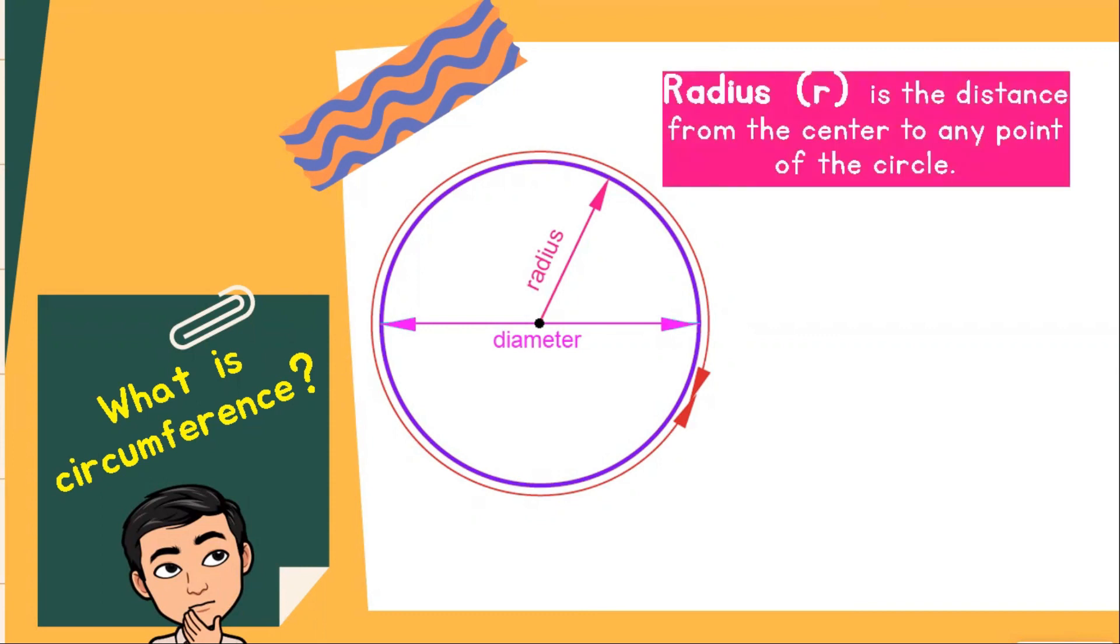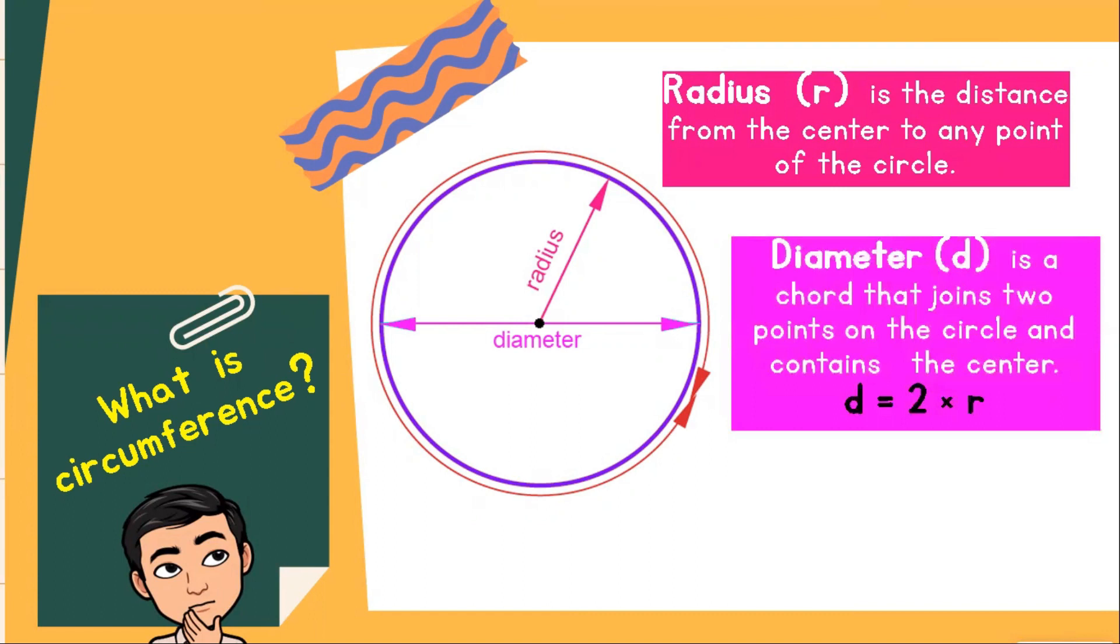First is the radius. The radius is the distance from the center to any point of the circle. Next is the diameter.